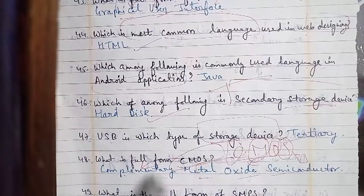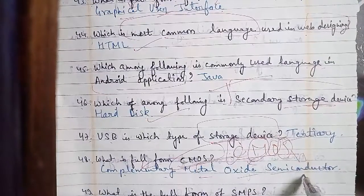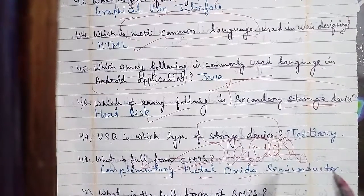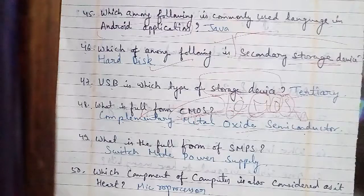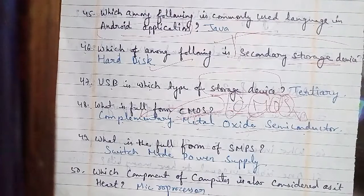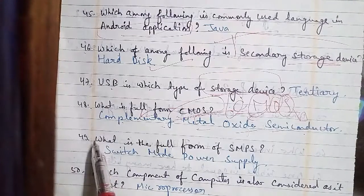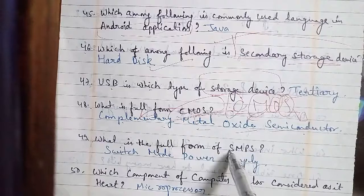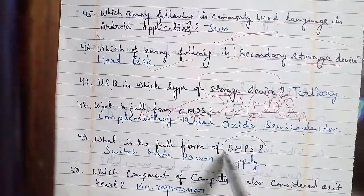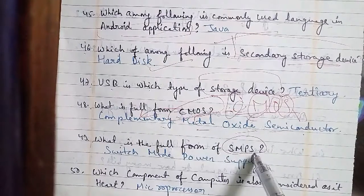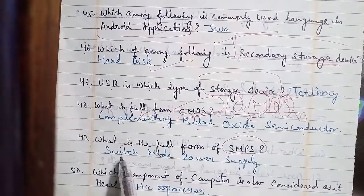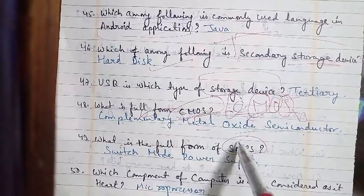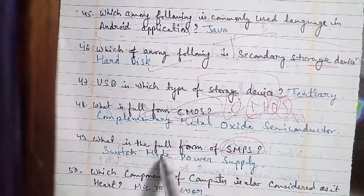Question number 49: what is the full form of SMPS in computers? The full form of SMPS is Switch Mode Power Supply — S stands for Switch, M stands for Mode, P stands for Power, and S stands for Supply.